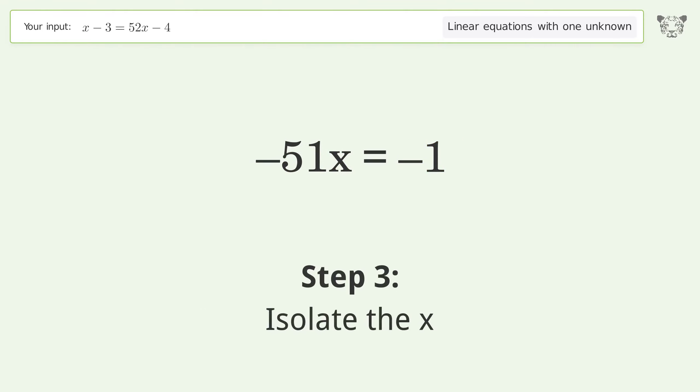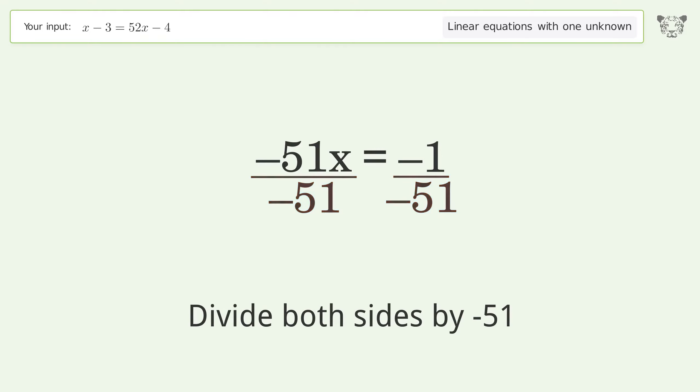Isolate the x. Divide both sides by negative 51. Cancel out the negatives.